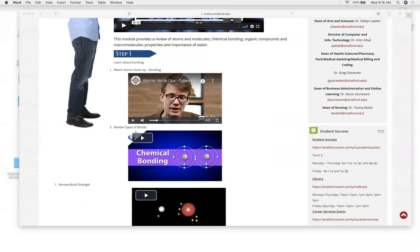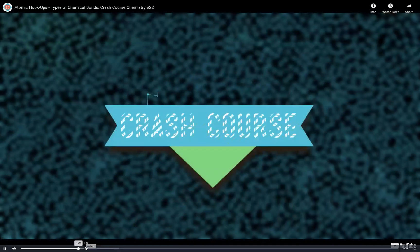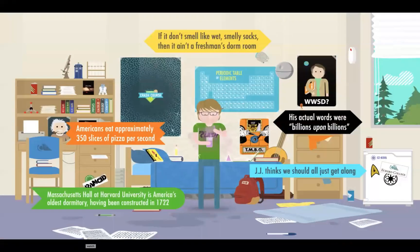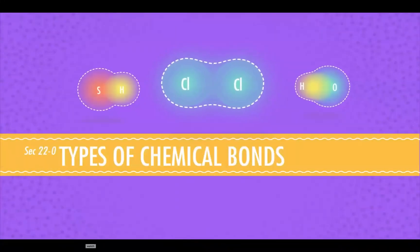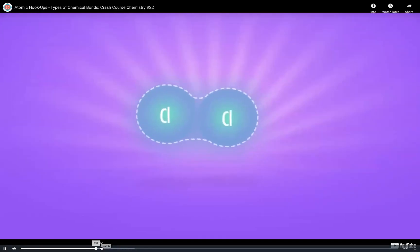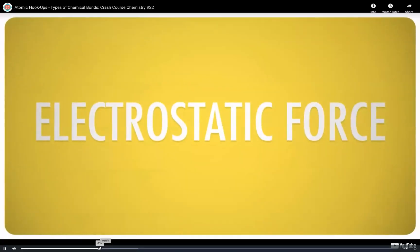Let's look at these different kinds of bonds. First things first — why do atoms do this at all? Like everything else in the universe, atoms do whatever they can to reduce their overall energy. They reach their lowest energy by achieving a balance between attractive and repulsive forces — being neither too clingy nor too aloof. When two atoms approach each other, the electrons of each are attracted to the protons of the other. This is the electrostatic force. Like charges repel; opposites attract.